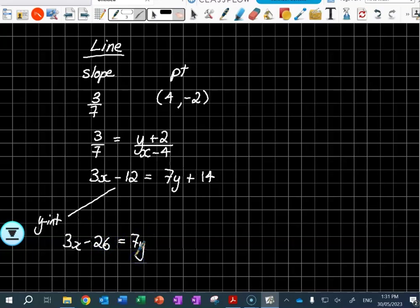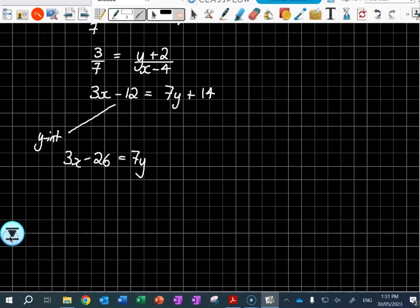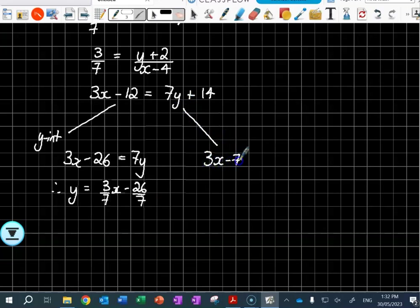Equals 7y, correct. And how do I get rid of that times 7? Divide by 7. So it's going to be therefore y equals 3/7 x take 26 over 7. If I wanted to put it in general form, then I have to have 3x take 7y, that goes on the other side, and it is 26. Know the difference. If it didn't say y-intercept or general, then you choose - you do whatever you want.